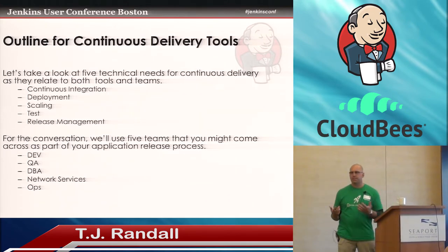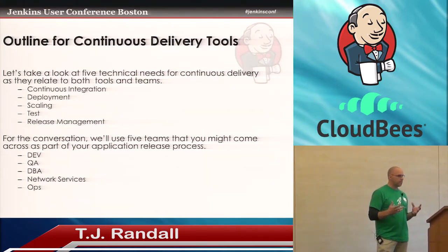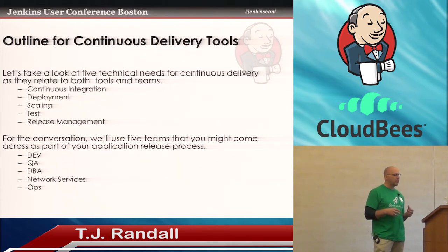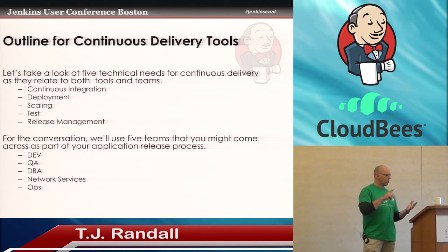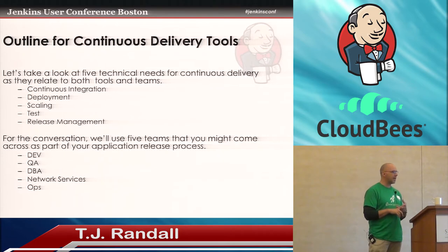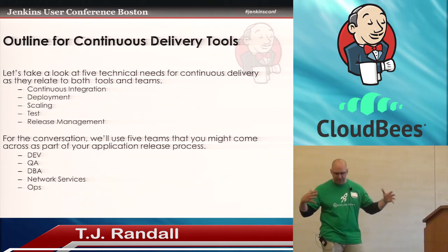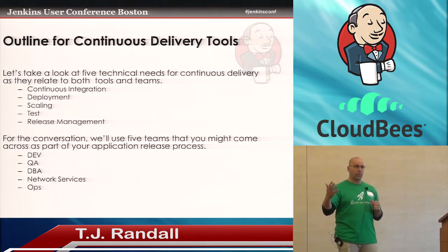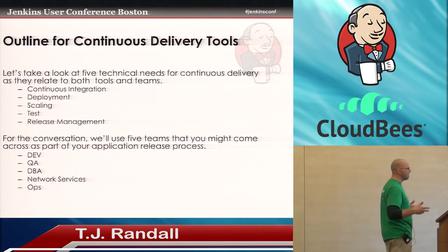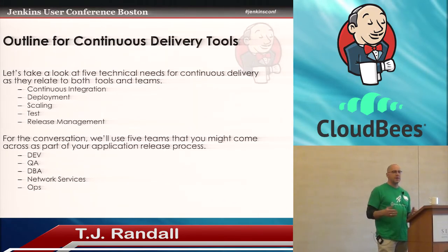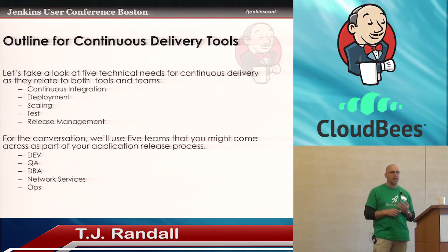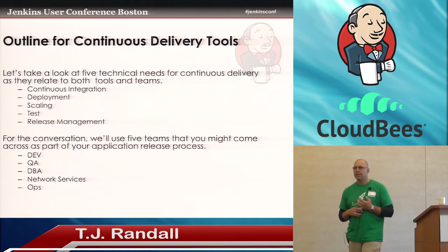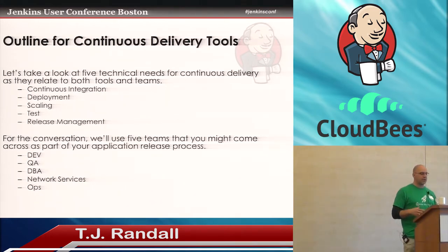So we're going to take a look at five technical needs for your continuous delivery goals: continuous integration, deployment, scaling, test, and release management. For this conversation, we're going to use five teams. Not every organization is structured the same way, but pretty much you can relate to the fact that when developing an application and trying to get it to production, you normally have a dev team, a QA team, a database team, network services, and operations. Let's talk about each of those areas and how that relates to the teams.